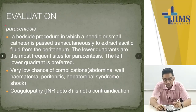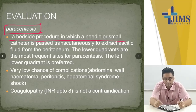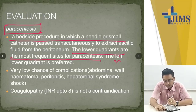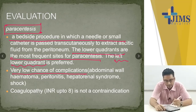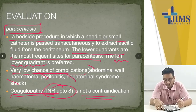For evaluation, the most important thing is paracentesis — a bedside procedure in which a needle or small catheter is introduced into the peritoneal cavity transcutaneously. The lower quadrants are the most frequent sites, with the left lower quadrant preferred. Complications are very low: usually abdominal wall hematoma, peritonitis, hepatorenal syndrome, or shock. INR up to 8 is not a contraindication for paracentesis.